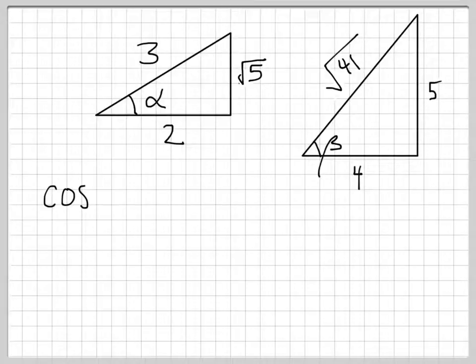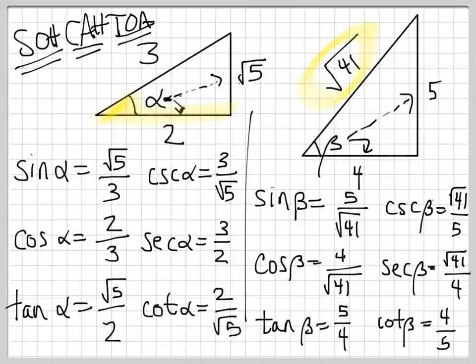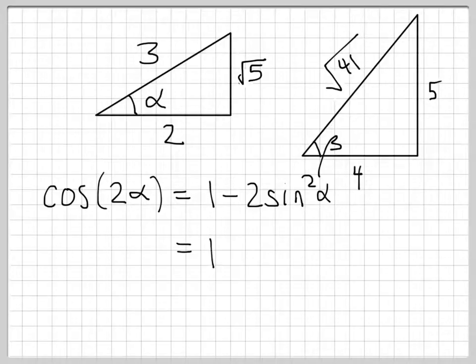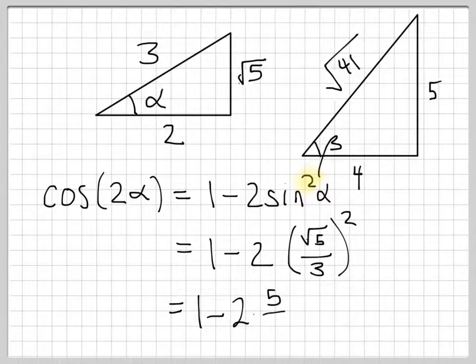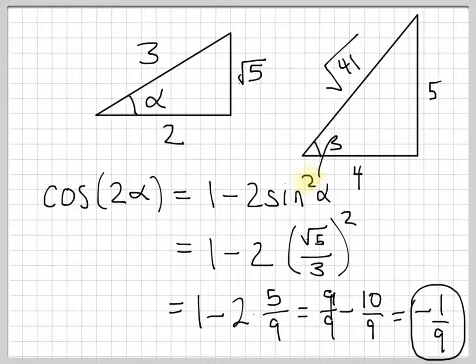Let's do cosine of 2 alpha. Well, there's a lot of ways we can write cosine of the double angle. Let's do 1 minus 2 sine squared alpha. And so if we go back two pages here, sine of alpha is radical 5 over 3. So we replace sine of alpha with radical 5 over 3. And remember, since it's sine squared, we have to square that. And so we get 1 minus 2 times 5 ninths. Radical 5 times radical 5 is 5. 3 times 3 is 9. And so we get 1 minus 10 ninths and we change 1 into 9 ninths and so negative 1 ninth. There's cosine of 2 alpha.